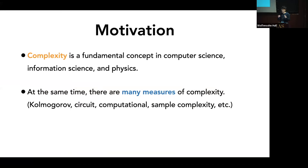While this is a broad concept used in many different places, it also has various different forms. For example, people in algorithmic information theory talk about Kolmogorov complexity. People in electrical engineering might talk more about circuit complexity, and people in computer science and machine learning talk more about computational and sample complexity. All of these, despite being complexity measures, can have very different forms.